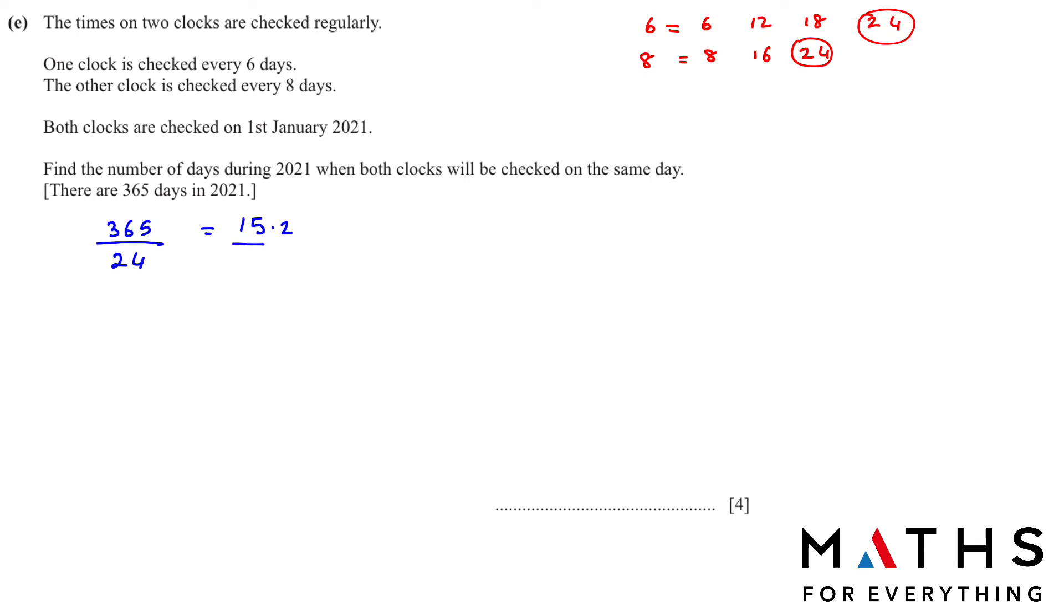We cannot have a point day, right? So the total number of days are 15. It was a very easy question. The only thing you needed to know was that you need to find the LCM and you divide your total with the LCM. And remember that if you don't get a whole number, you have to take the next whole number. So that's our answer.